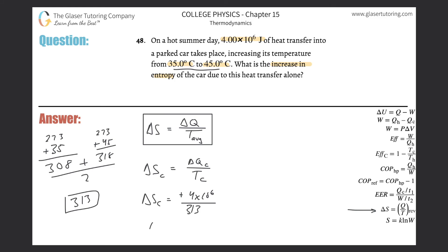So 4 times 10^6 divided by that value, and we get an approximate answer of about 1.28 times 10^4, and that's entropy - joules per Kelvin.